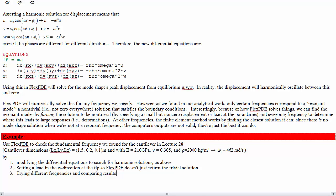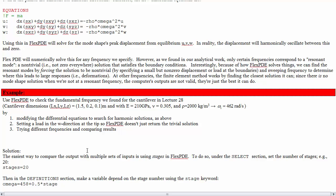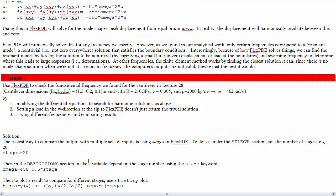It's easiest to iterate over the results using the stages syntax in FlexPDE. This is a new syntax you may not have seen before. Under the select section, you set a number of stages that you want to do. This tells you how many times you want FlexPDE to solve the same problem. For example, stages equals 20.